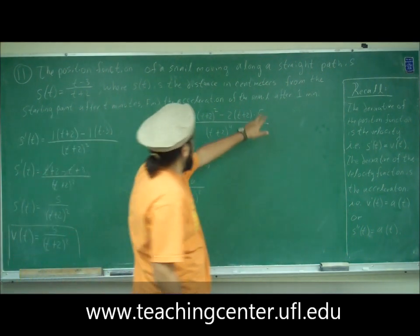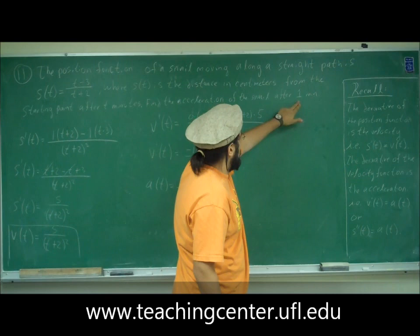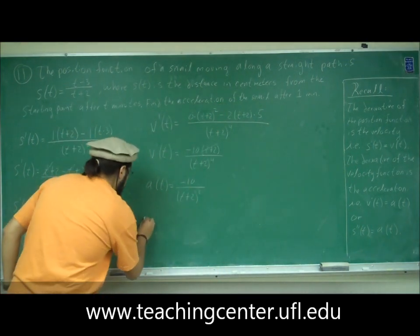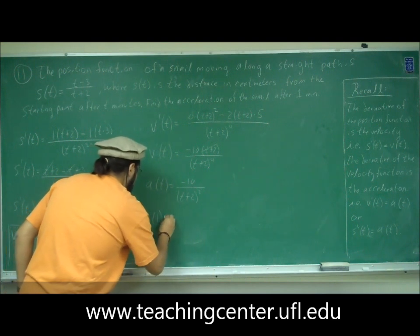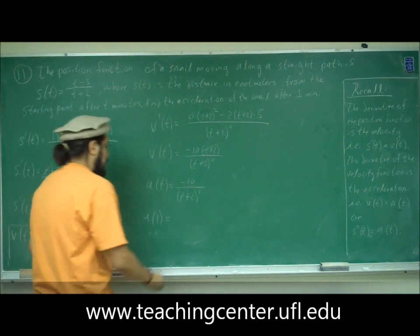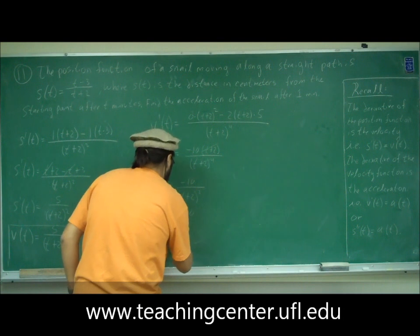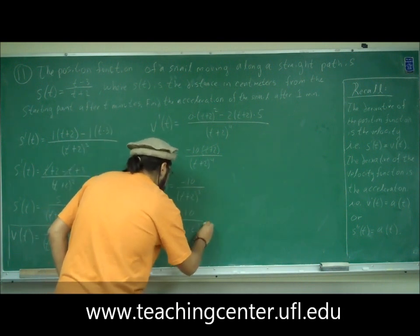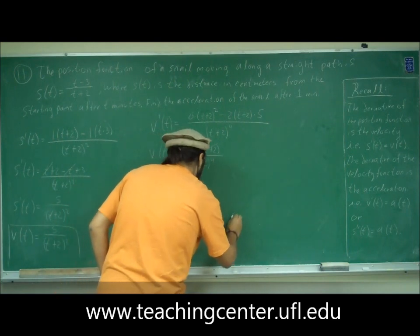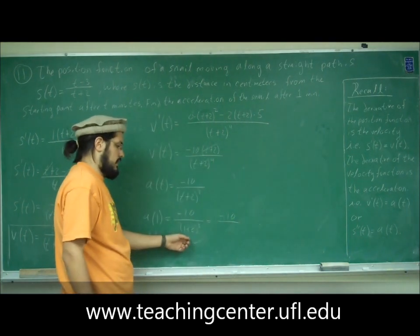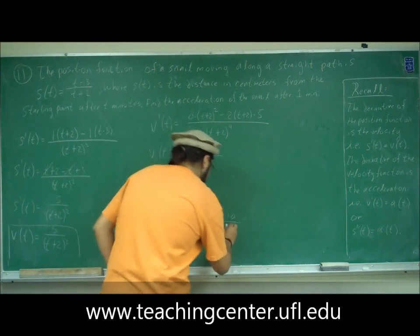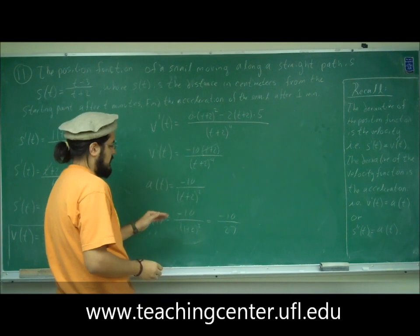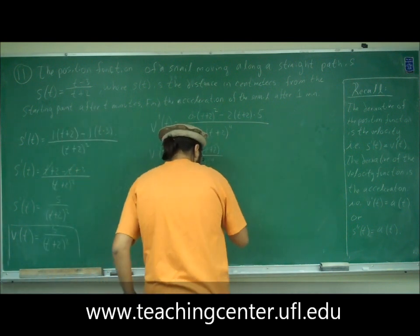Now we want to find the acceleration after 1 minute, so t equals 1. We evaluate a(1): it's negative 10 divided by (1 plus 2) cubed, which is negative 10 divided by 3 cubed. 3 times 3 is 9, and 9 times 3 is 27. So we have negative 10 divided by 27 as our answer.